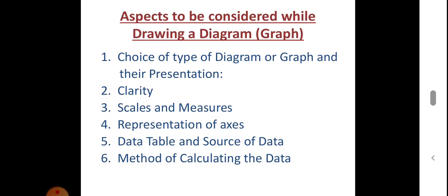Sixth point is method of calculating the data. When data is not self-explanatory, it is simplified with a statistical formula. It is necessary to mention the statistical method briefly. Diagrams are meant to be self-explanatory, but when we draw a graph or diagram for other people, it is necessary to mention the statistical method briefly so they understand by which method the data was analyzed.